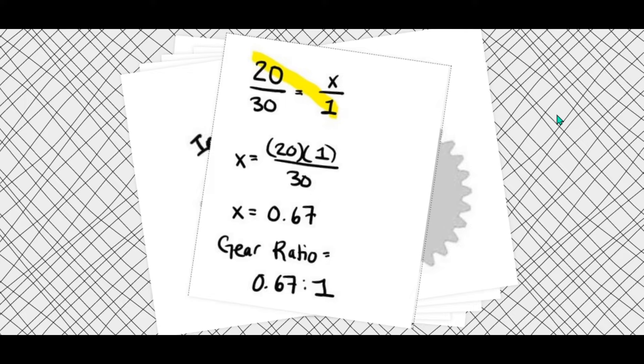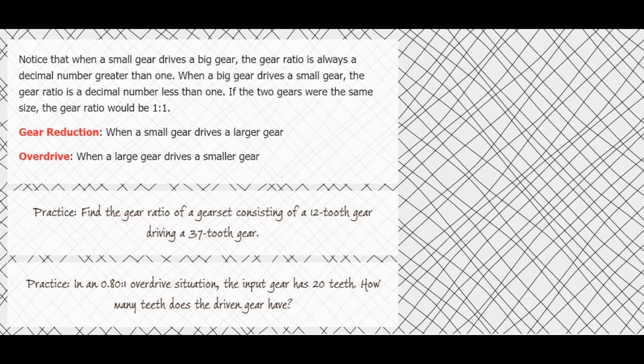Having a decimal is fine; you just want to make it something to 1. When a small gear drives a big gear, that's a gear reduction situation. The gear ratio will always be a number greater than 1 — for example, 1.5 to 1, or even 30 to 1. Those are all gear reduction situations.